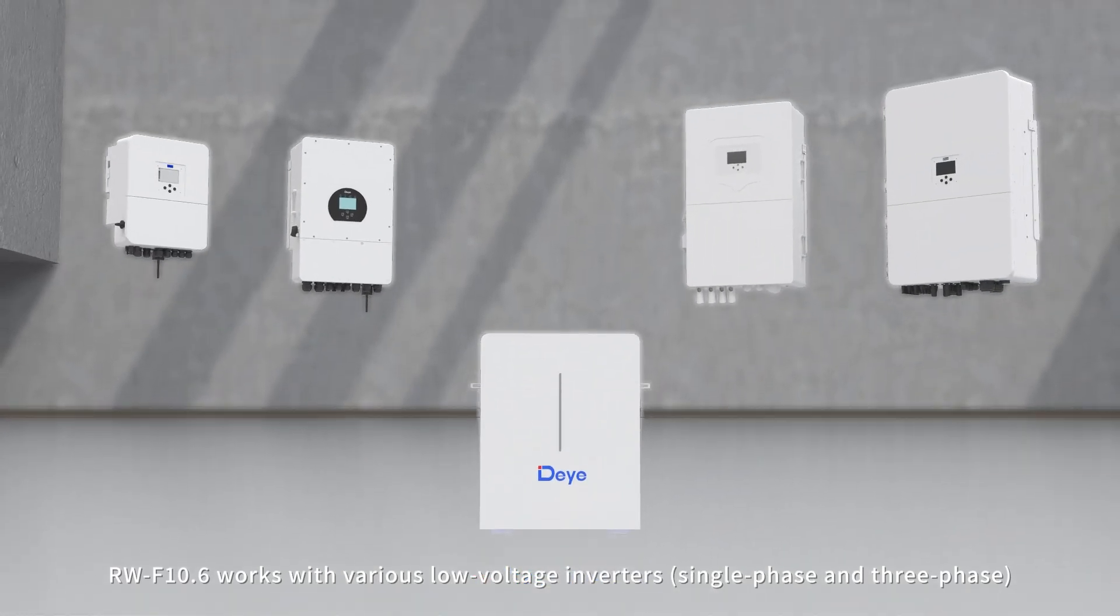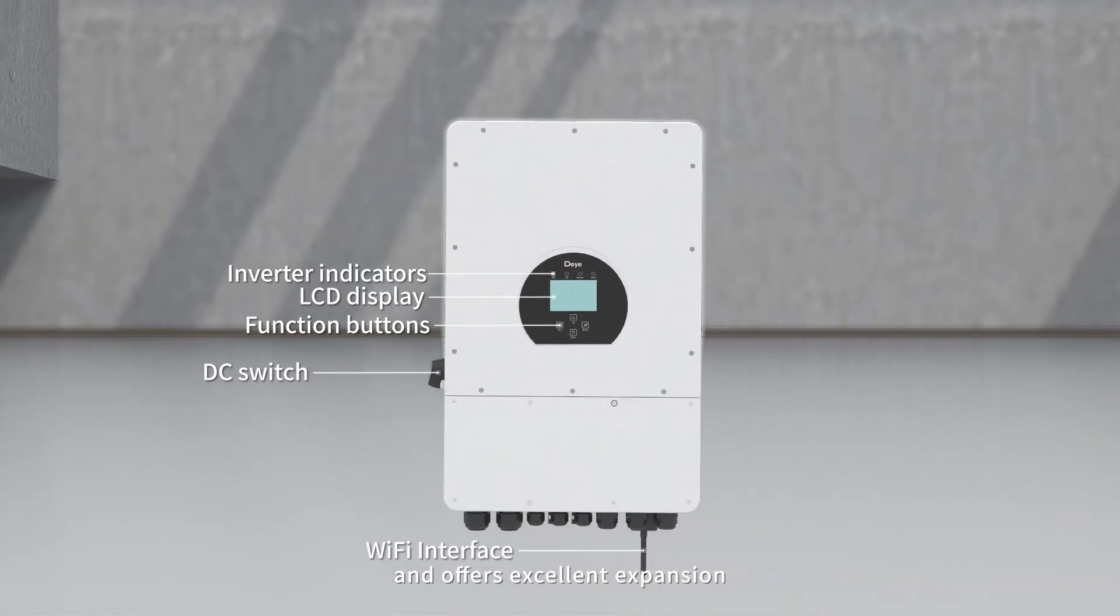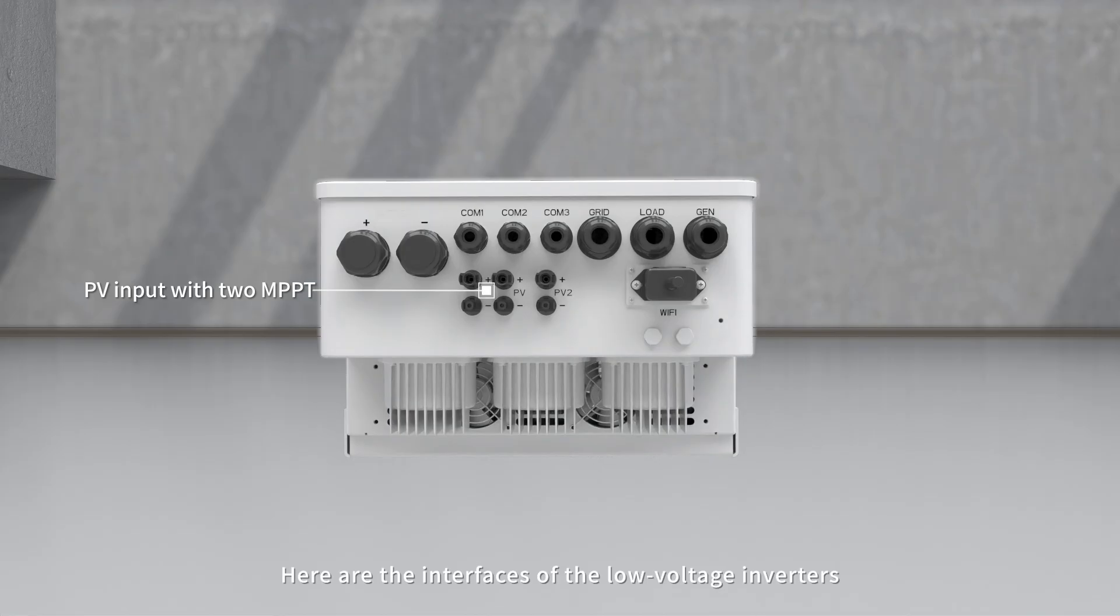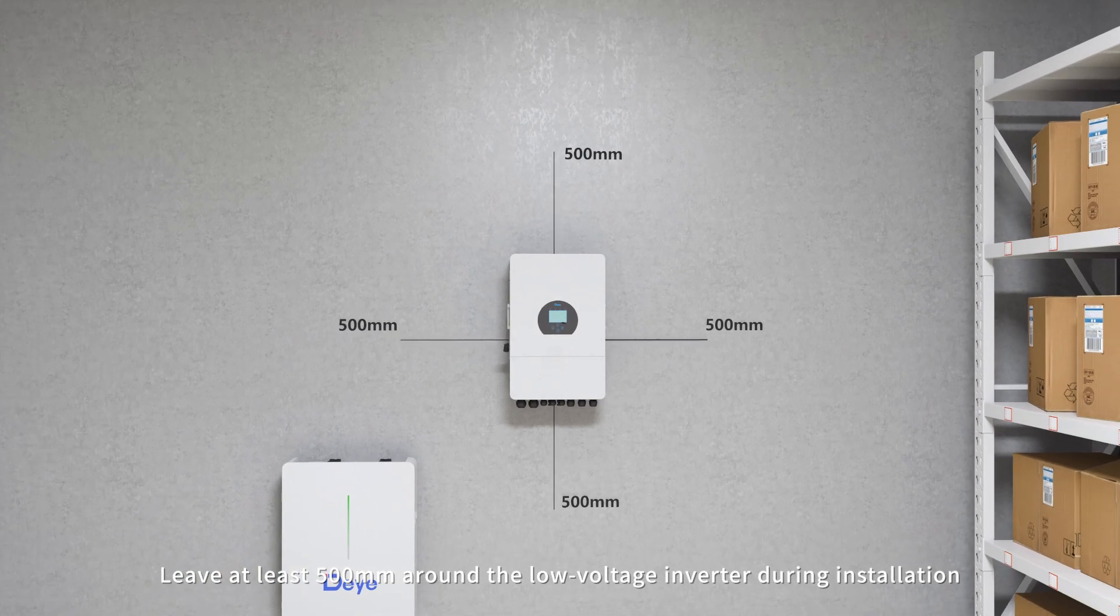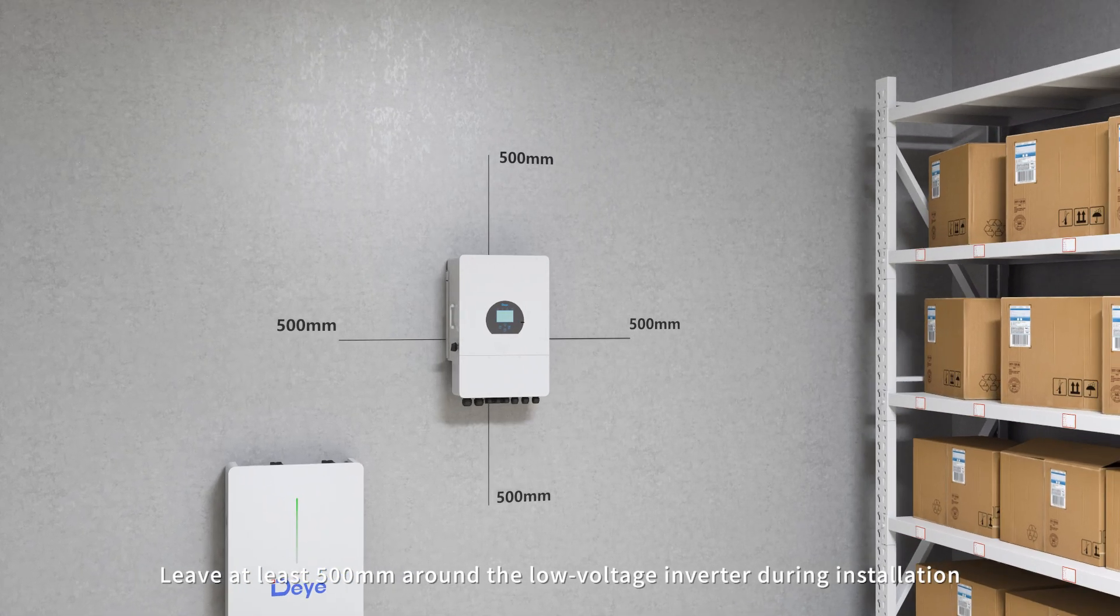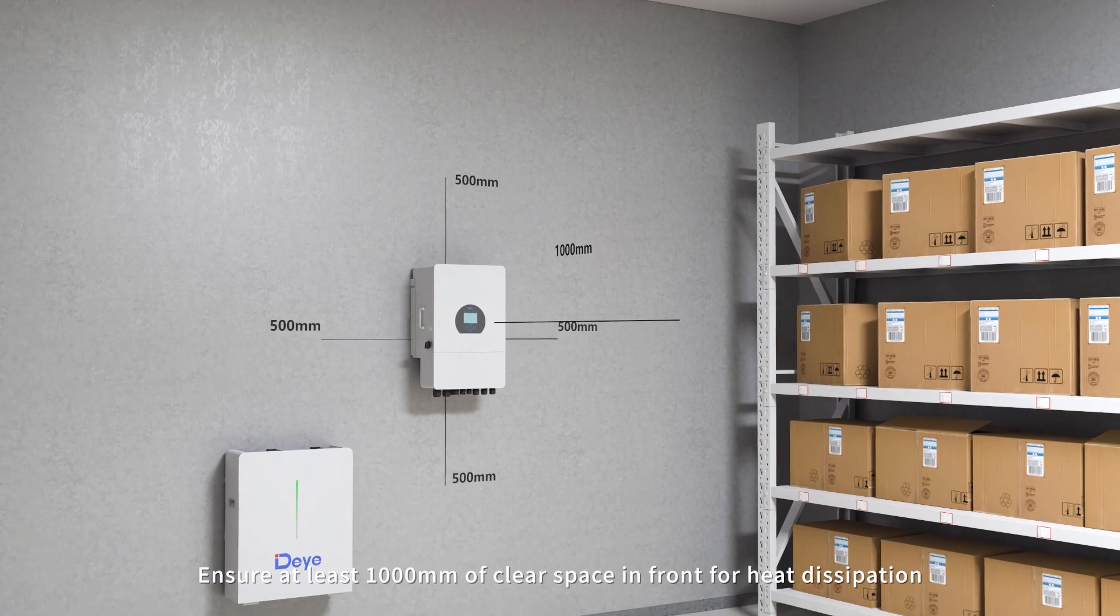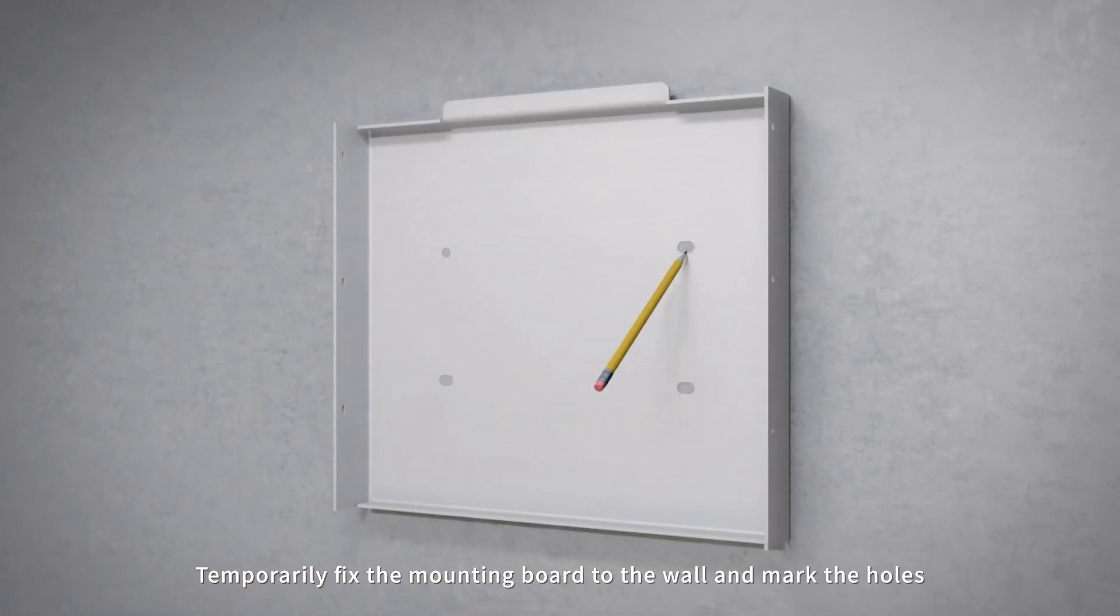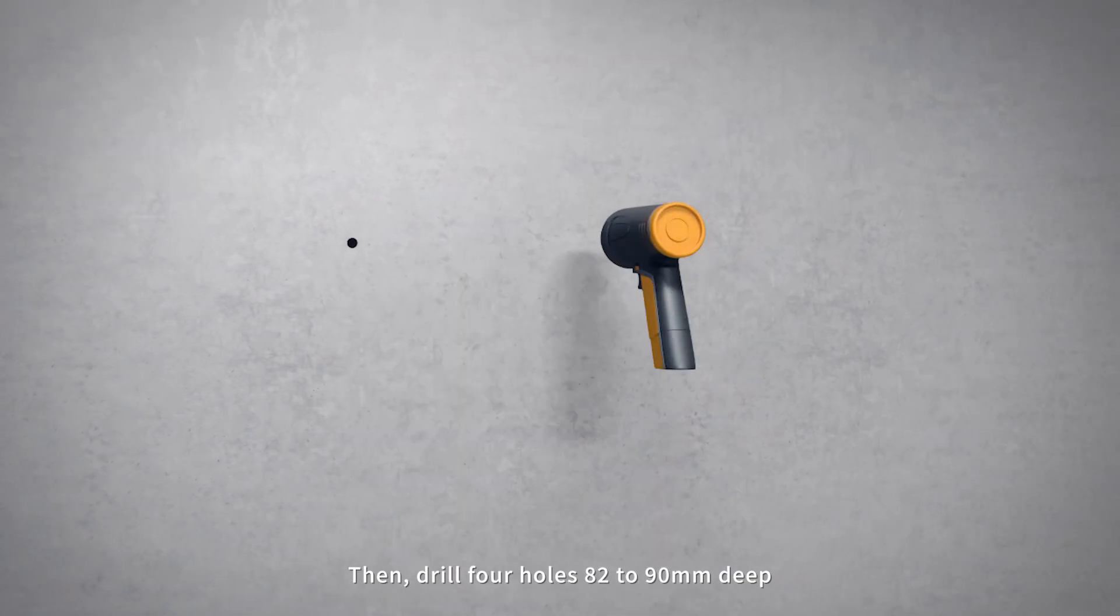Inverter installation: RW-F10.6 works with various low voltage inverters and offers excellent expansion. Here are the interfaces of the low voltage inverters. Leave at least 500 millimeters around the low voltage inverter during installation. Ensure at least 1000 millimeters of clear space in front for heat dissipation.